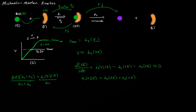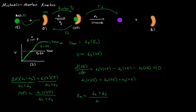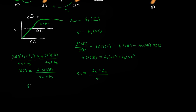Now let's define a new term, Km, the Michaelis constant: Km = (K2 + K3) / K1. Substituting this in, the concentration of the substrate-enzyme complex becomes [SE] = [S]·[E] / Km.